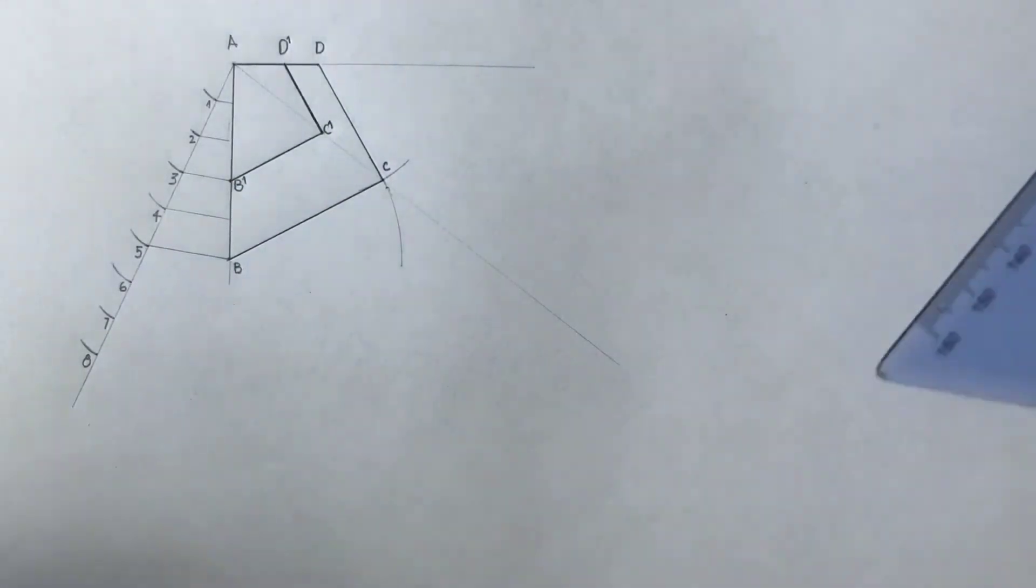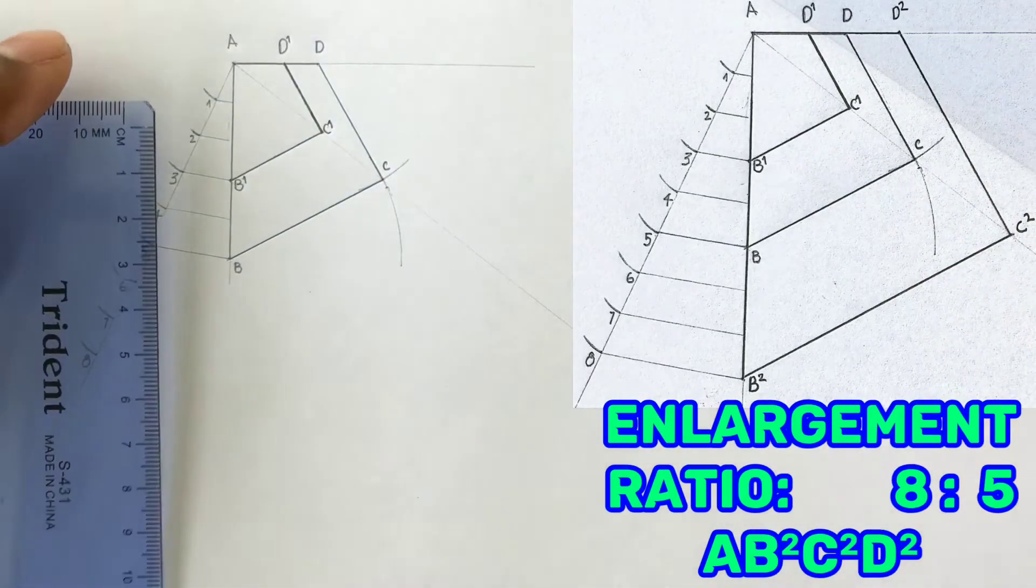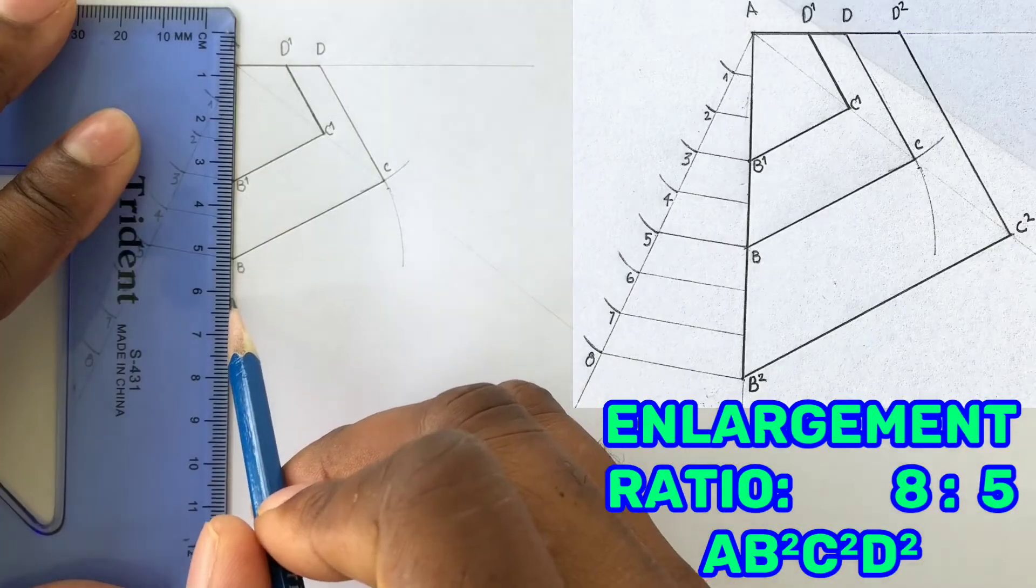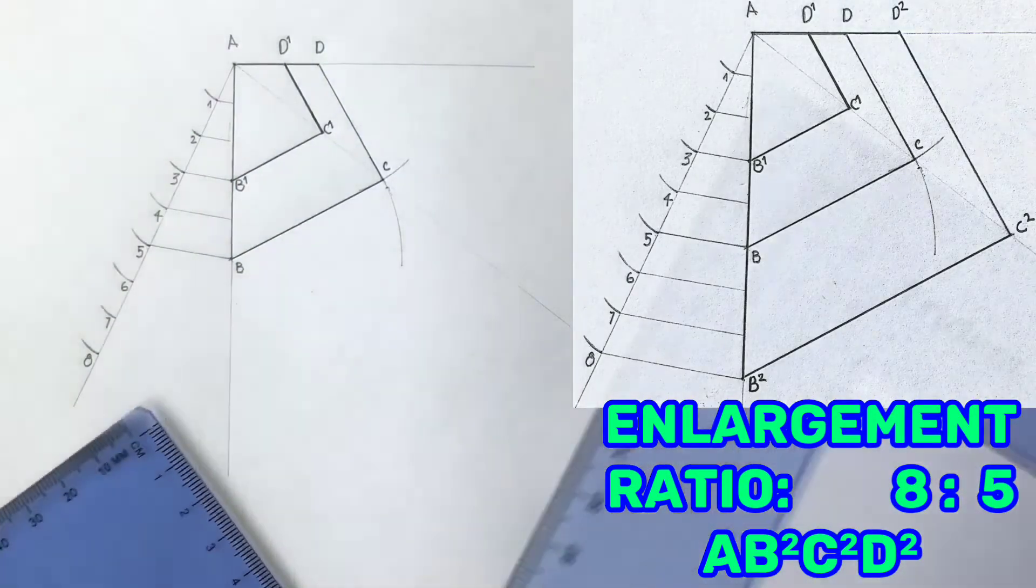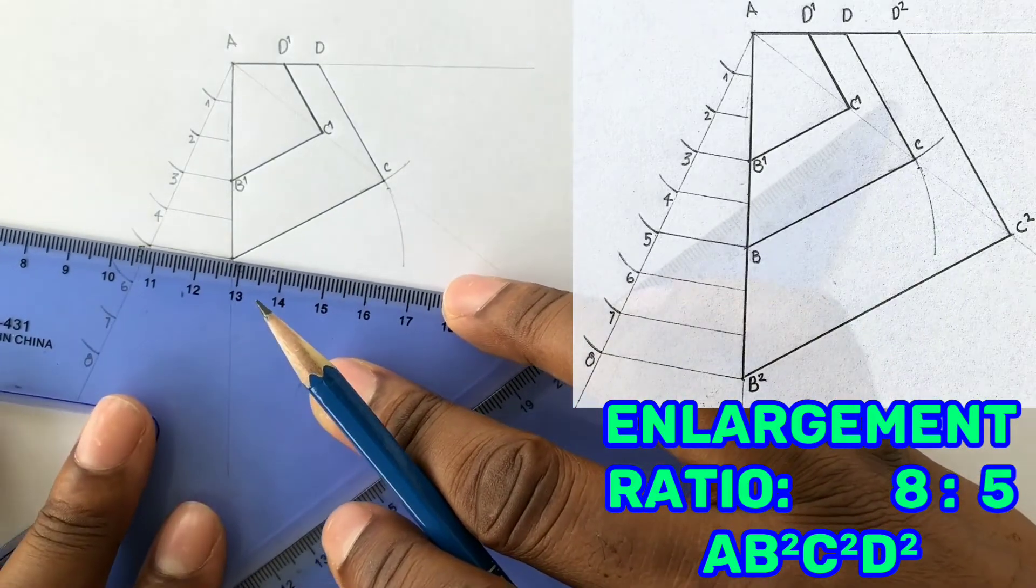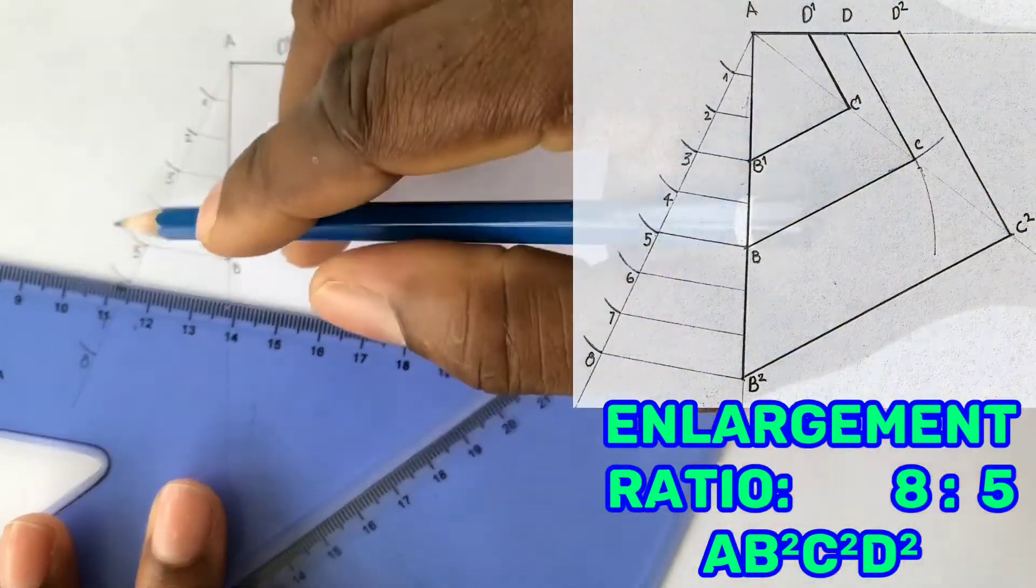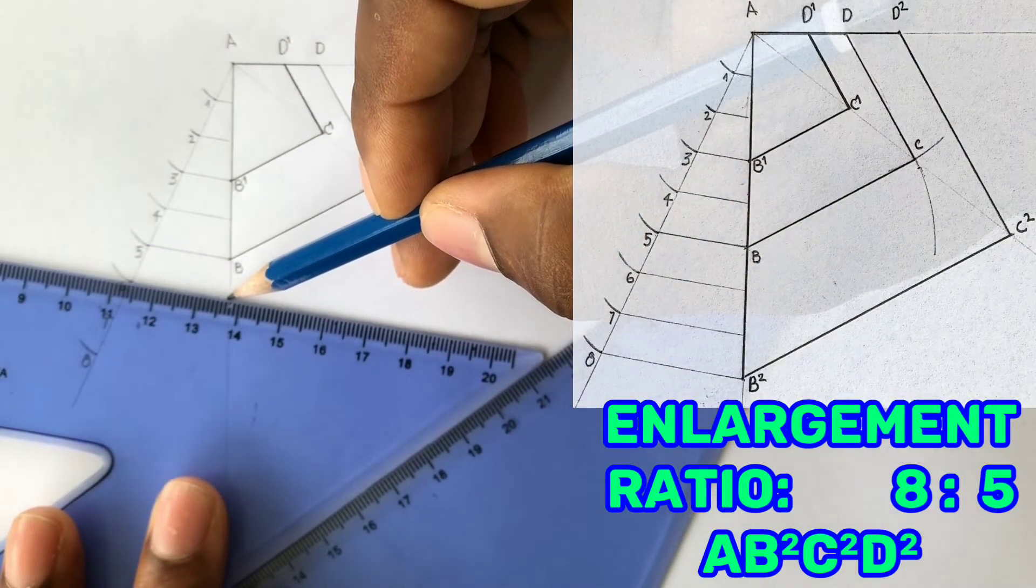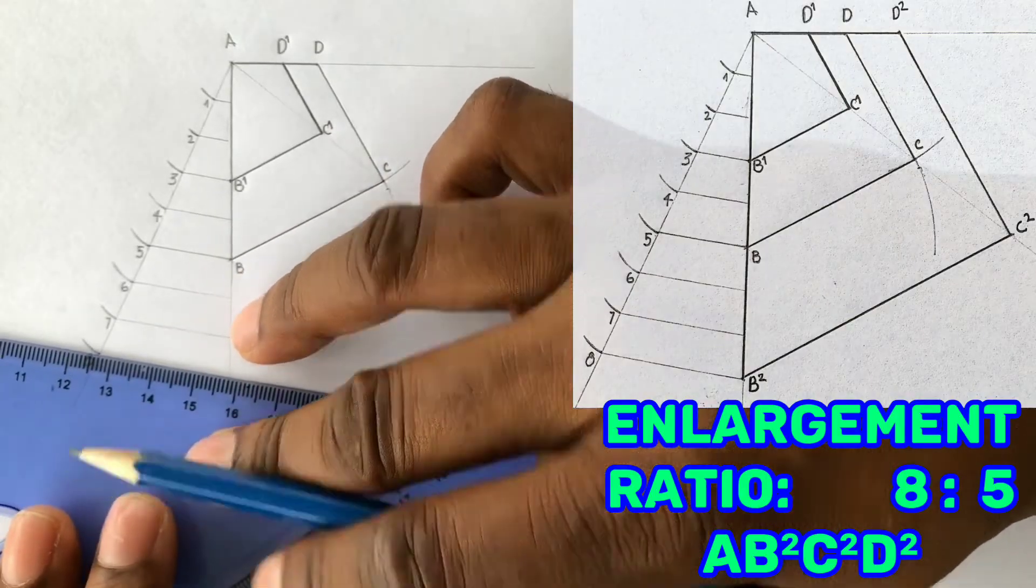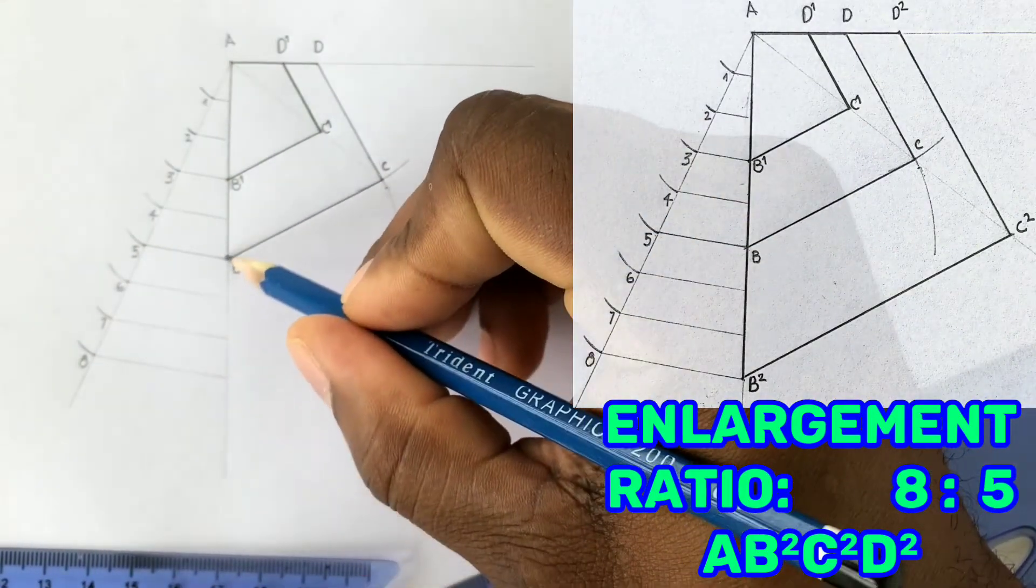We now need to enlarge the given quadrilateral by a ratio of 8 to 5. Firstly, extend line AB from point B. Place a set square along point B, then with another set square under this set square, slide the top set square to point 6, 7, and 8 and draw parallel lines to touch the line that was extended from point B. We have just added three more divisions based on the enlargement ratio, 8 to 5.